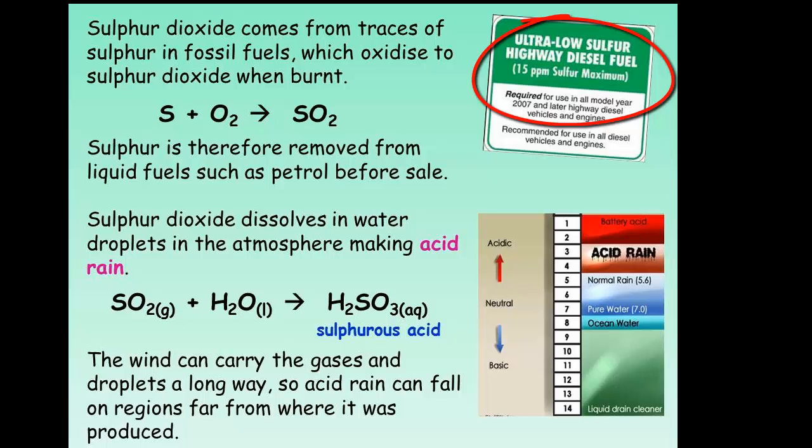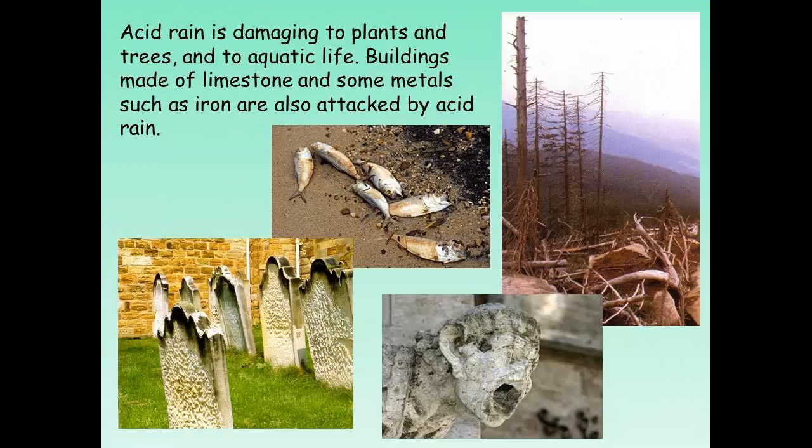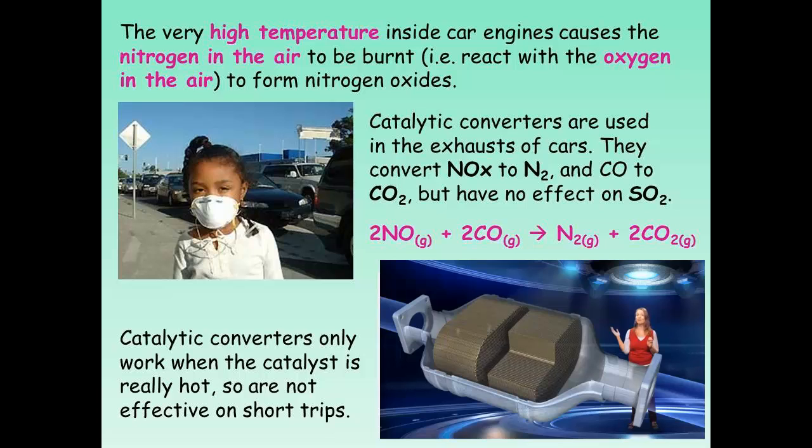The sulphur dioxide that has dissolved to form the sulphurous acid, also known as acid rain, has a number of issues associated with it. First of all, it can lower the pH of lakes and streams, affecting aquatic life. It can affect the pH of soil, affecting the growth of trees. It can also react with limestone buildings or statues, attacking them and eroding them.